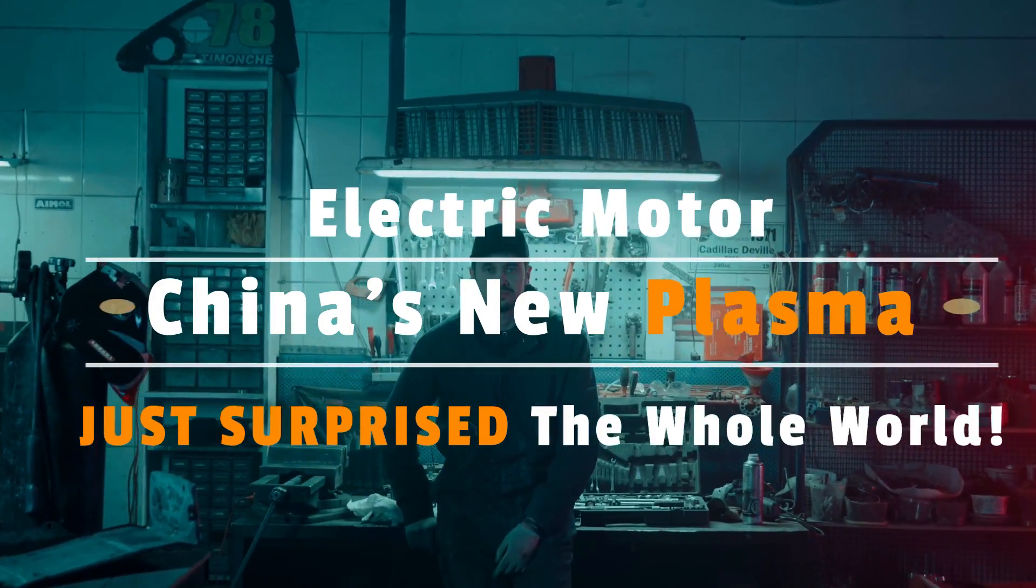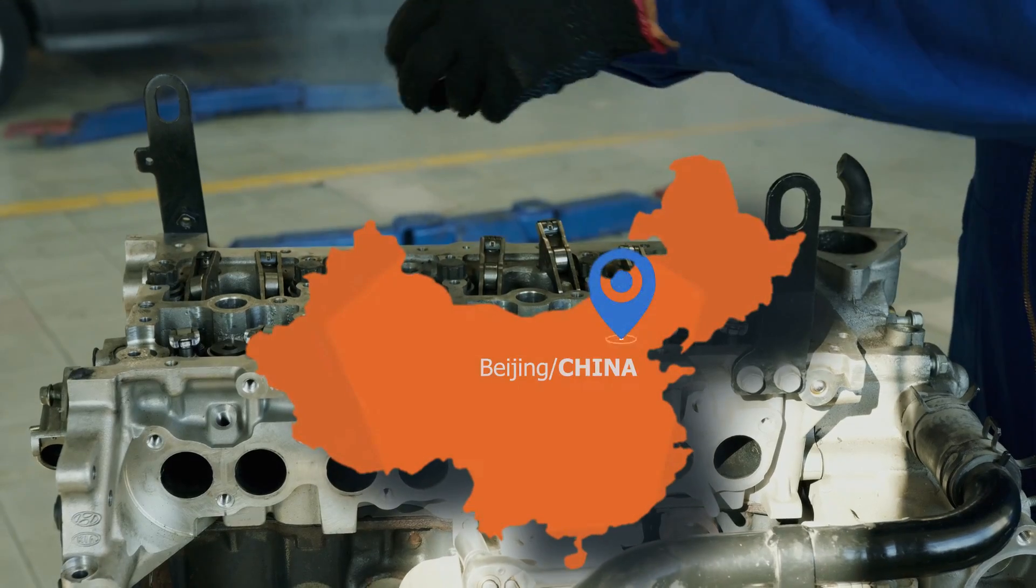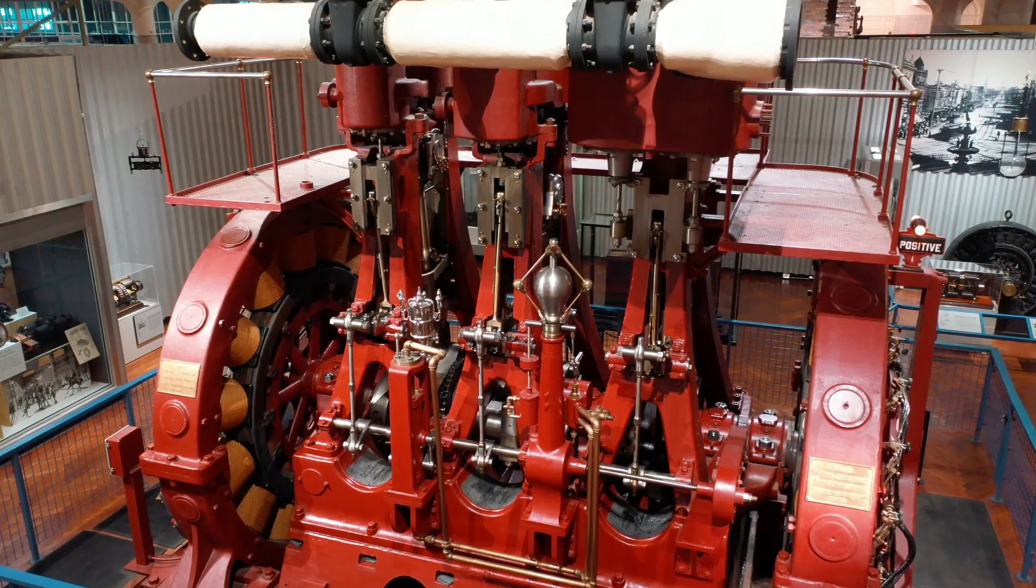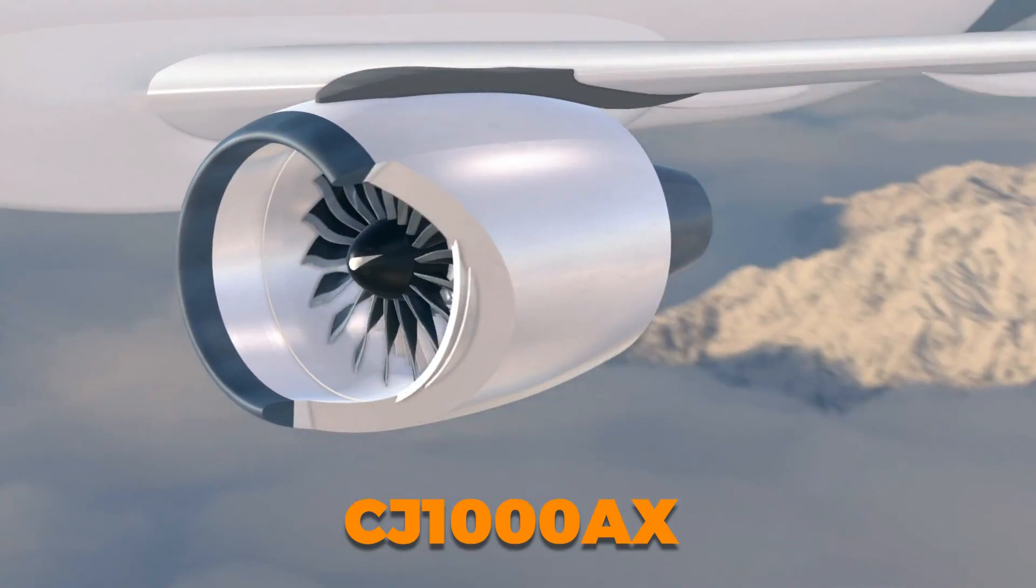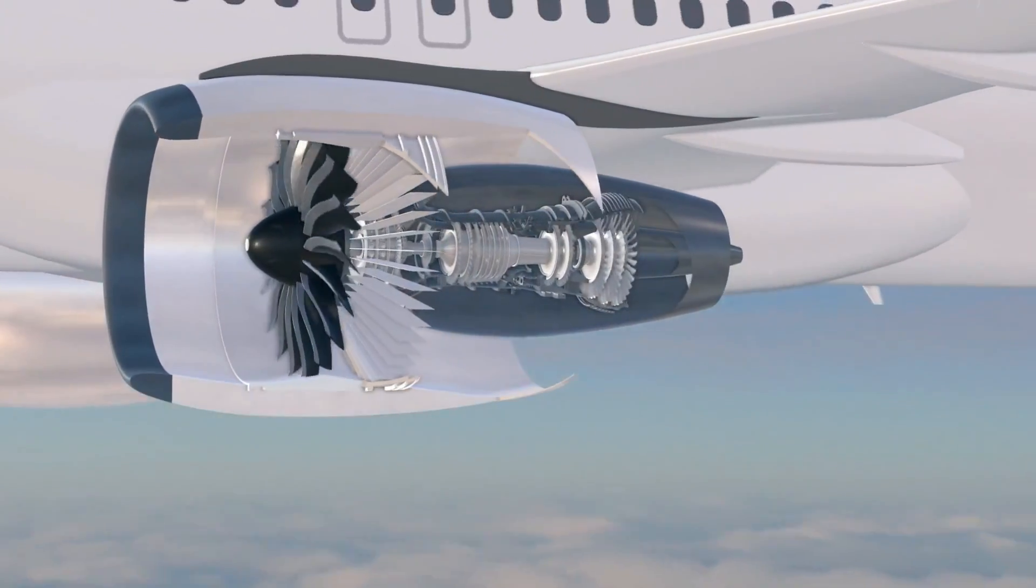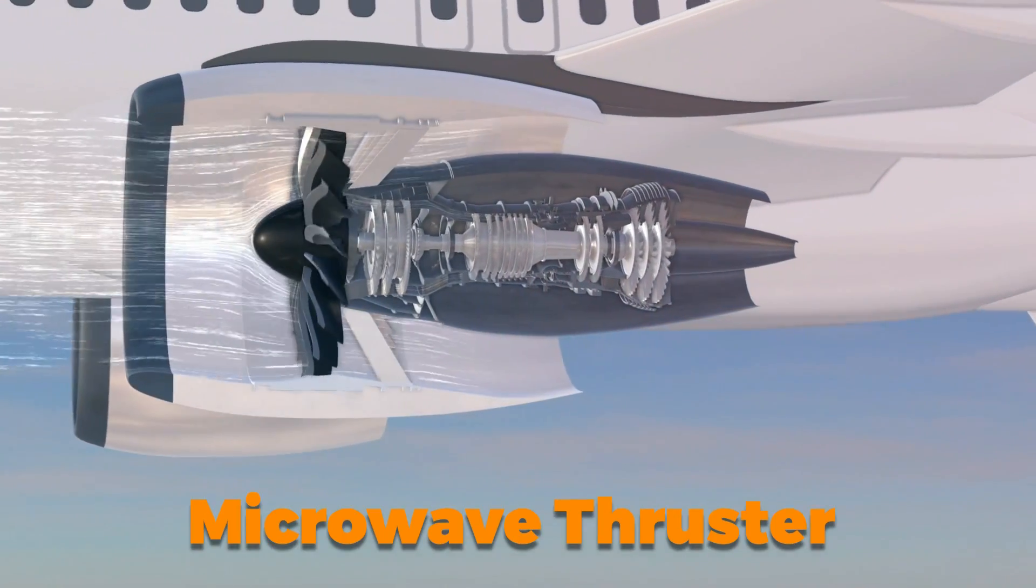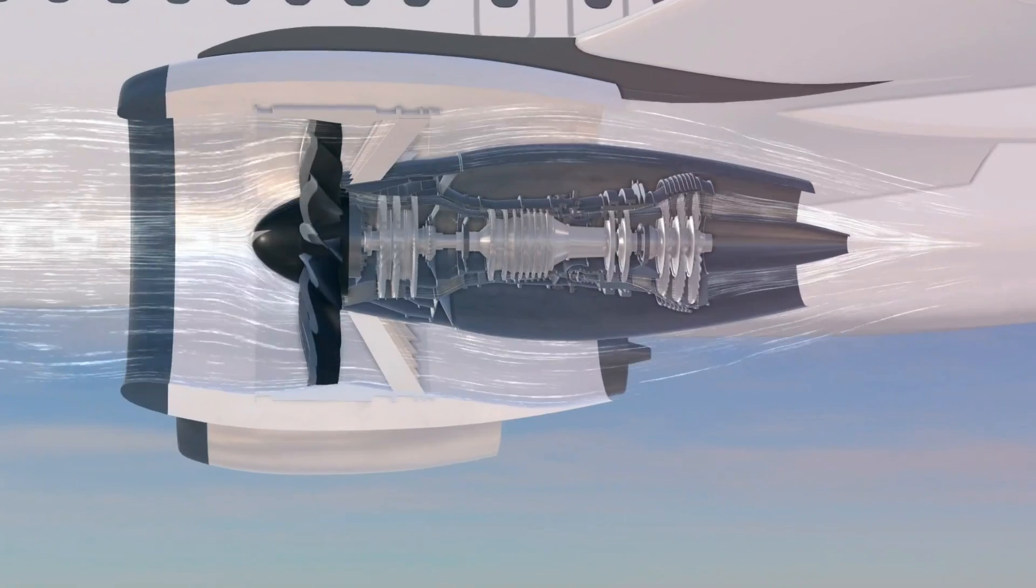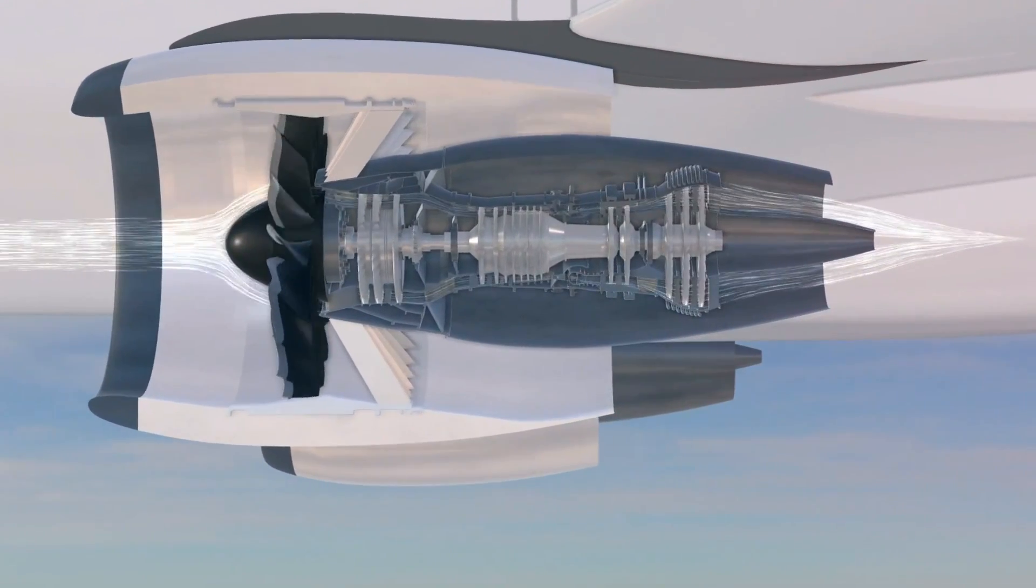China's new plasma electric motor just surprised the whole world. China is on fire again. They're advancing electric mobility and aviation with the CJ-1000AX turbofan engine and a groundbreaking microwave thruster prototype, aiming to revolutionize air travel and reduce environmental impact.